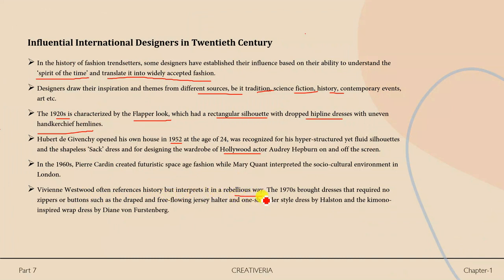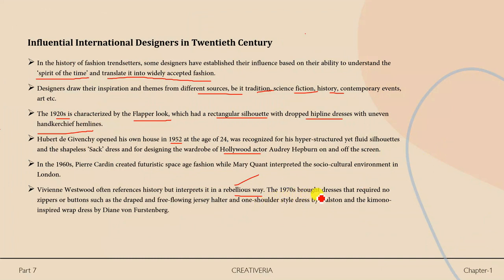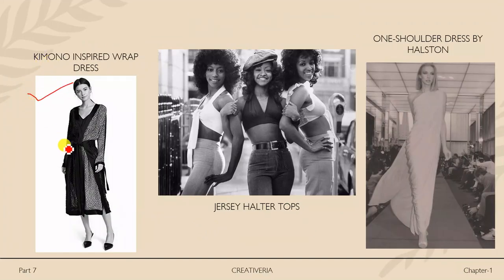Vivienne Westwood often references history but interprets it in a rebellious way — researching historical context but presenting it unconventionally through striking coats and graphic prints on T-shirts and tops. In the 1970s, broad dresses requiring no zippers or buttons emerged, such as the free-flowing jersey halter and one-shoulder style dress by Halston, and the kimono-inspired wrap dress by Furstenberg.